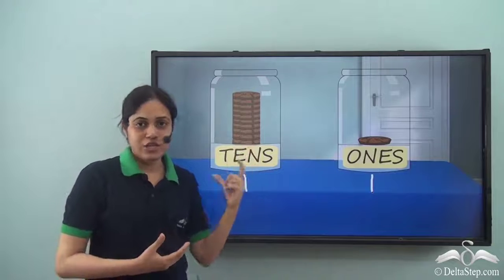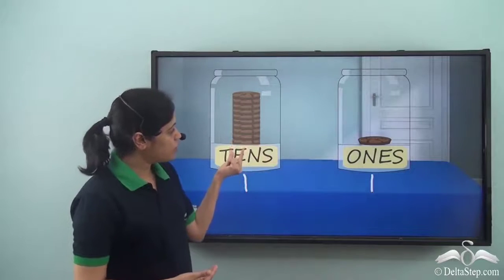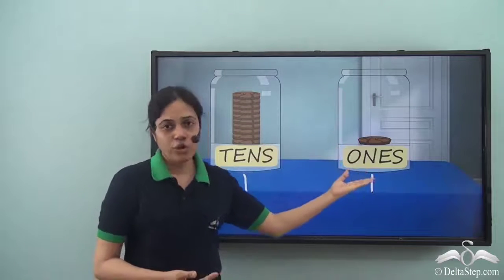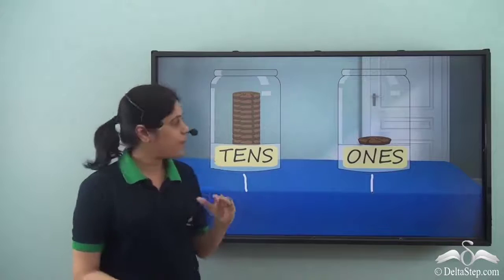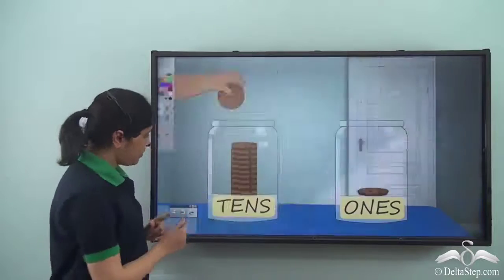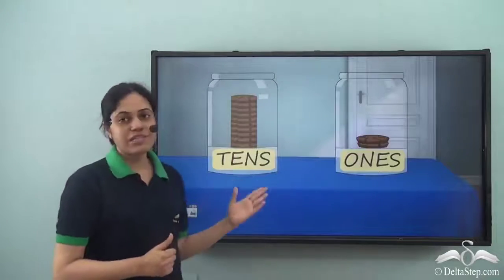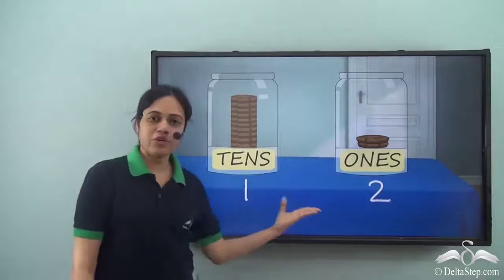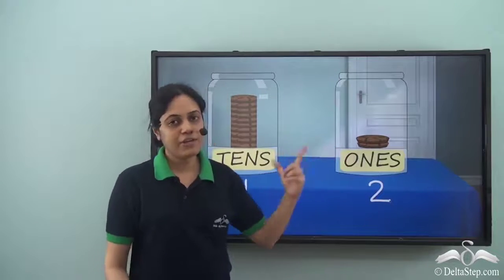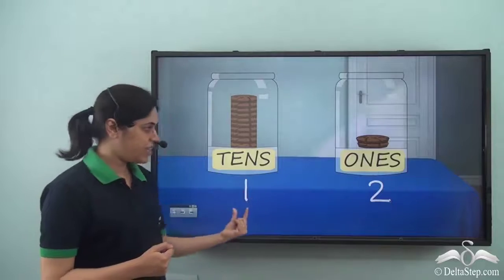This is how we group numbers, just like we have grouped the cookies. When we group numbers into tens, we can represent them like this. The ones jar cannot have ten cookies — it can have a maximum of nine cookies. As soon as we add the tenth cookie, they form a pile and go to the tens jar. Once again Abir added a single cookie to the tens jar and it jumped to the ones jar. Now there are one tens and two single cookies, which means there are twelve cookies — because ten plus two gives us twelve. So twelve is one tens and two ones.